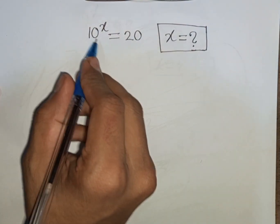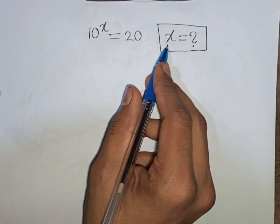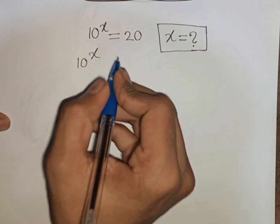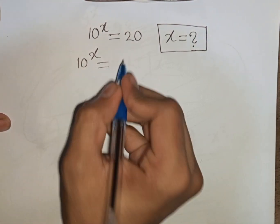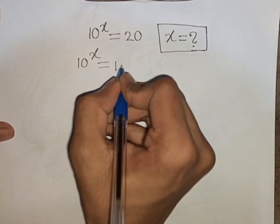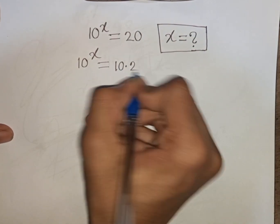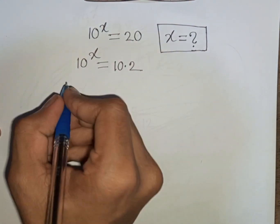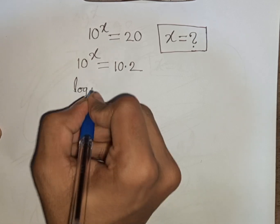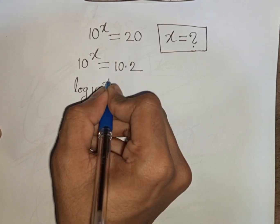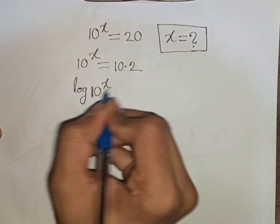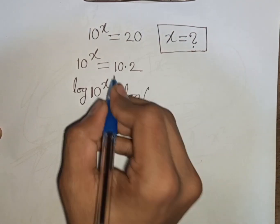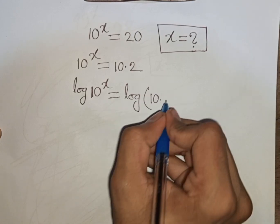How to solve 10 power x is equal to 20 — find the value of x. We have 10 power x is equal to 20, which can be written as 10 times 2. Now we take log in both sides, so we can write log of 10 power x is equal to log of 10 times 2.